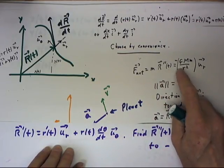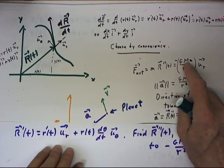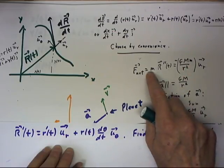By Newton's law of universal gravitation, this force has magnitude big G, big M, little m over r squared, where little m is the mass of the Earth.